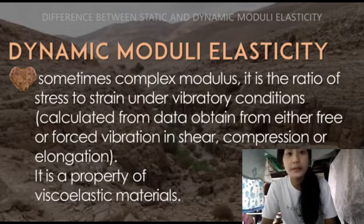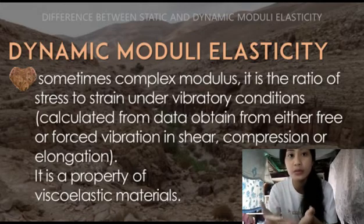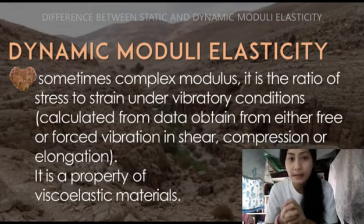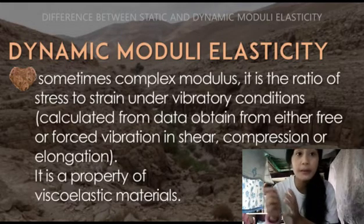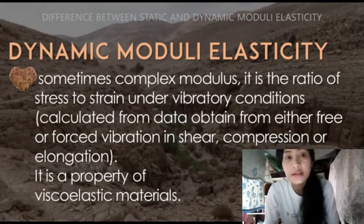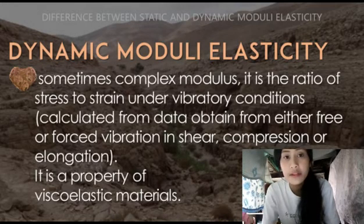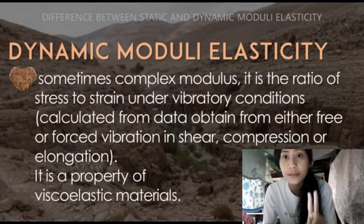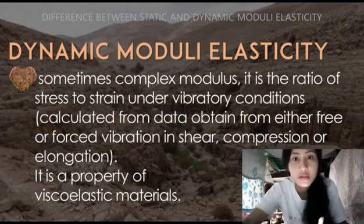Dynamic moduli of elasticity is a property of viscoelastic materials. Viscoelastic materials are materials that possess both viscous and elastic properties. Elasticity refers to the ability of a material to return to its original form after being stretched or compressed. Viscous refers to having a sticky consistency between solid and liquid — an example is honey. Viscoelastic materials exhibit both of those characteristics. An example of viscoelastic materials is polymers.